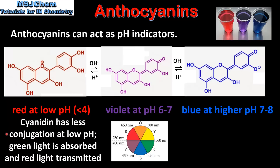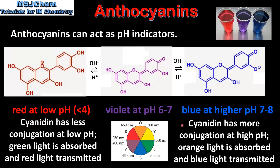Cyanidin has less conjugation at low pH, so green light is absorbed and red light is transmitted. At high pH, cyanidin has more conjugation, so orange light is absorbed and blue light is transmitted. As the amount of conjugation in the molecule increases, the wavelength of light absorbed also increases, from green light at low pH to orange light at higher pH.